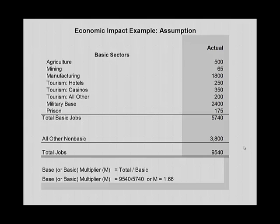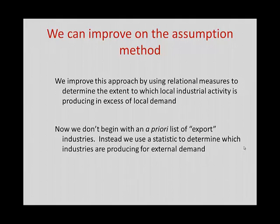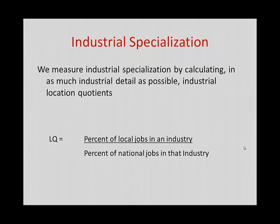This is fine in the short run for determining your regional multiplier, but we can do better. We can improve on the assumption method by using relational measures that measure specialization in your regional economy. We use what's called a location quotient. We don't begin with an a priori list of export industries like we did with the assumption. Instead, we use a statistic called the location quotient to determine the industries that are likely to be producing for external demand.